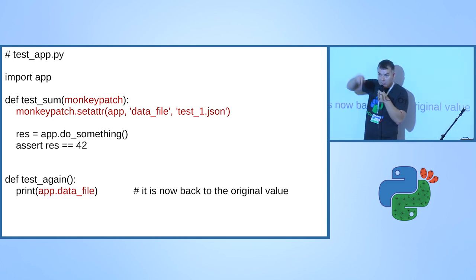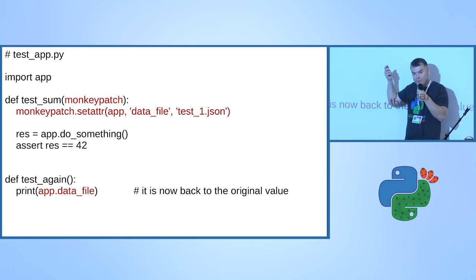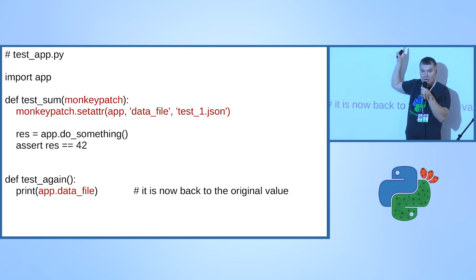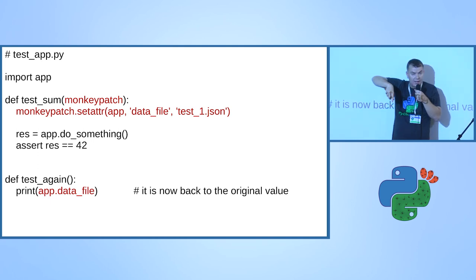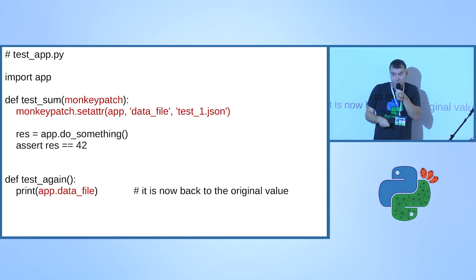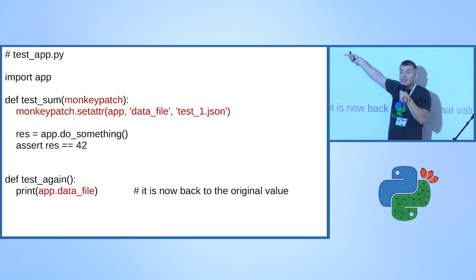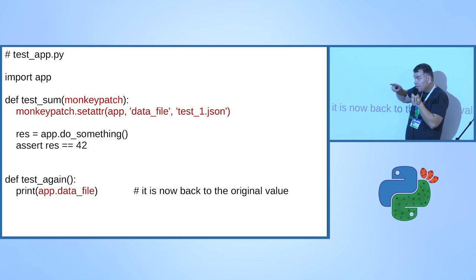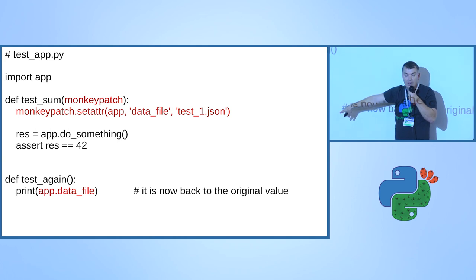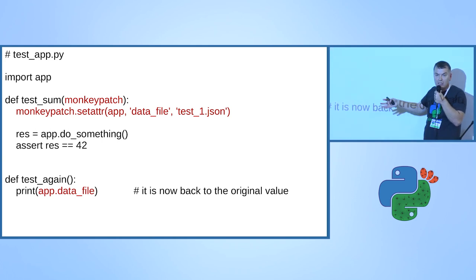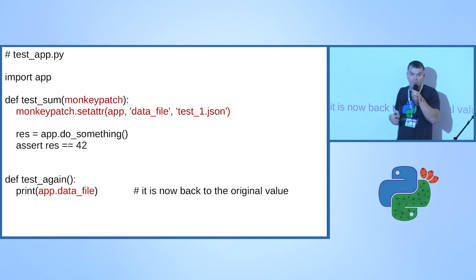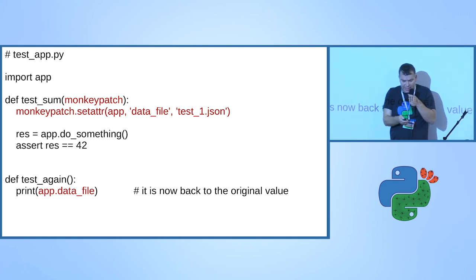There's a better way: using the monkeypatch fixture of PyTest. The fixture is called monkeypatch, and you call monkeypatch.setattr() passing essentially the same parameters. It does exactly the same thing, except now you can see it's monkey patching because it's in the function definition - you can search for it, making it easier to locate. And this change is now specific to this test function, so the next test function is not affected by it.